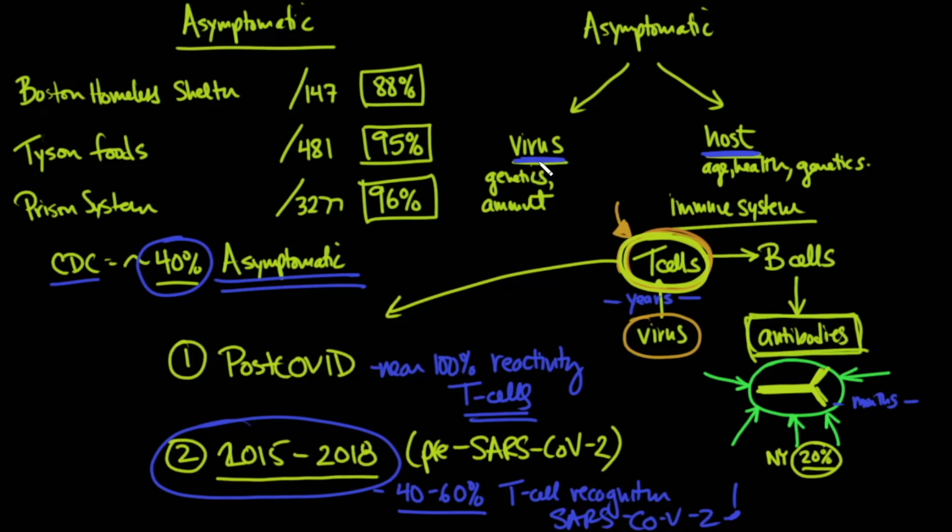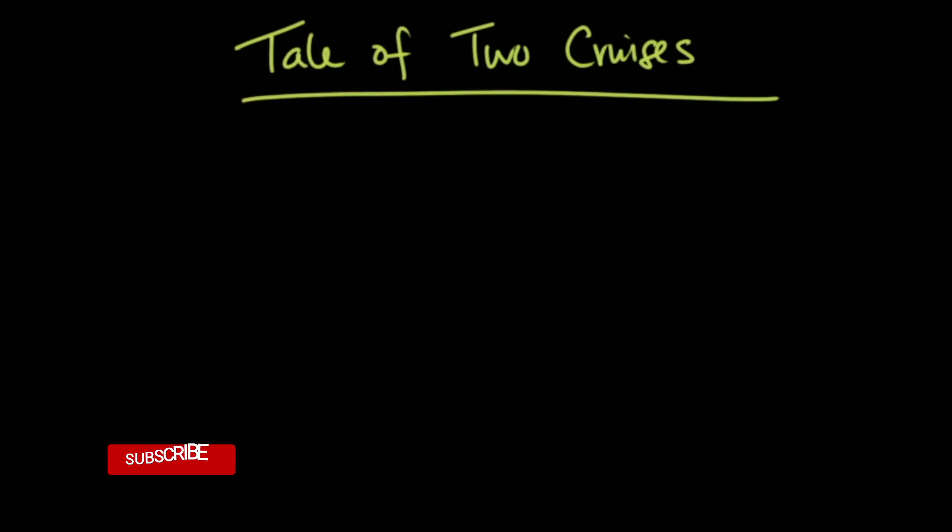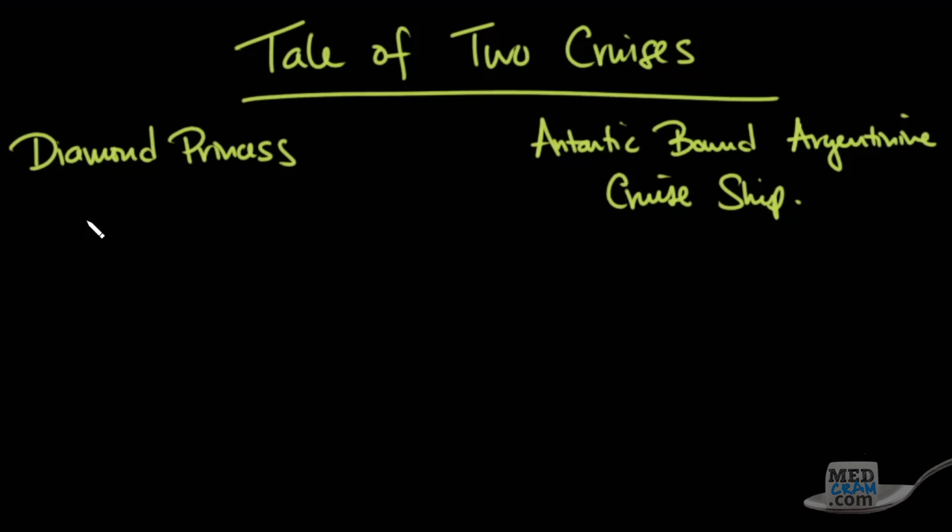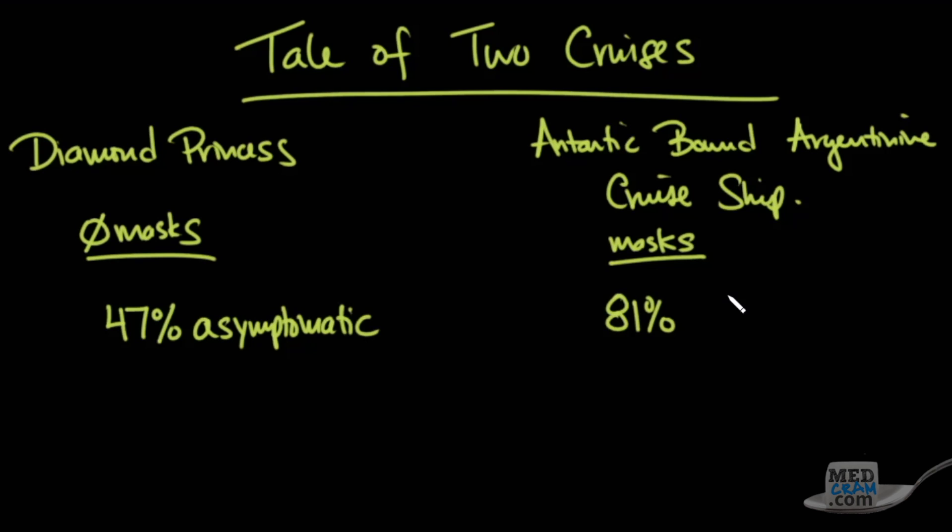But is it also possible that the virus itself, or how the virus gets into the body, may be having an effect? And I think the answer there is yes, and the way to tell that story is through the tale of two cruises. The first cruise is the Diamond Princess, and the other was an Antarctic-bound Argentinian cruise ship. With the Diamond Princess, there were no masks that were given out. But on the Antarctic-bound Argentinian cruise ship, there were masks that were given. Surgical masks to the passengers, and N95 masks to the crew. And what they found when they looked at those that were asymptomatic, there were 47% of those on the Diamond Princess that were asymptomatic, whereas on the Argentinian cruise ship where they handed out masks, 81% of those were asymptomatic.